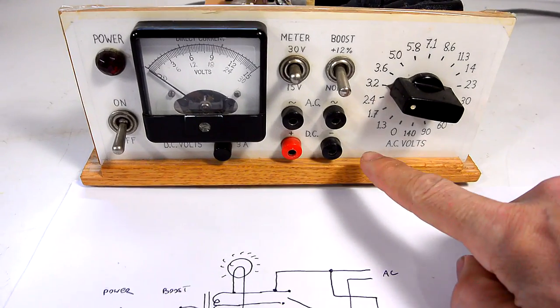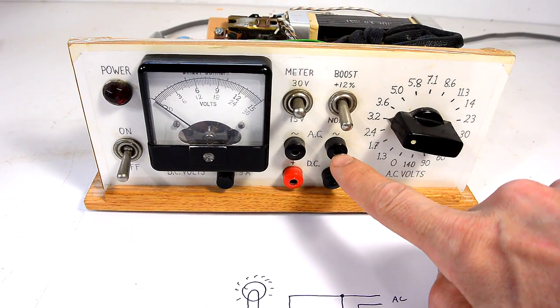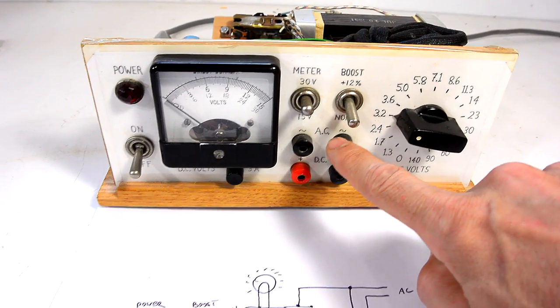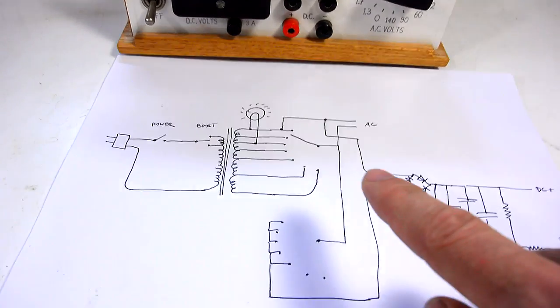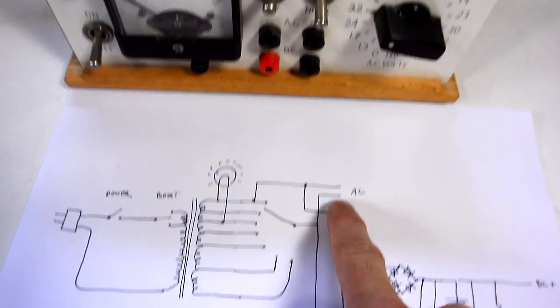One thing that's really cool about this power supply that you don't find on modern electronic power supplies is it has an AC output. This outputs just directly the 60 hertz that comes straight out of the transformer. After the switch we come straight out here - there's no fuse, there's no current protection.